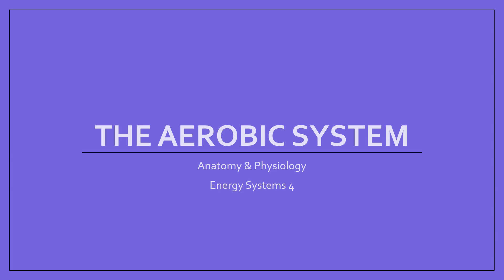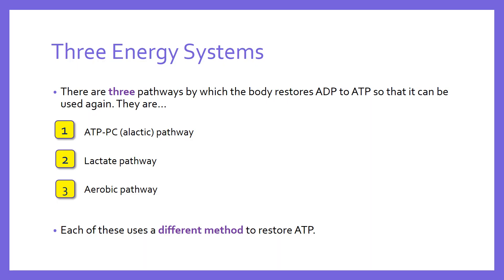Let's talk about the aerobic system — one of the three energy systems the body has. These are three ways the body takes ADP, produced after ATP is broken down to provide energy in the muscle, and resynthesizes ATP. ATP is the only compound the muscle can use to provide energy for movement. Once it's broken down — which only takes a few seconds — we need to resynthesize it by finding a phosphate and sticking it back onto the ADP molecule to restore it to ATP. The first and quickest way is the ATP-PC pathway, the second is the lactate pathway, and today we're talking about the aerobic pathway.